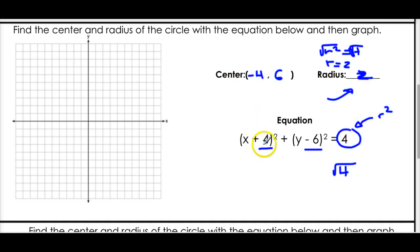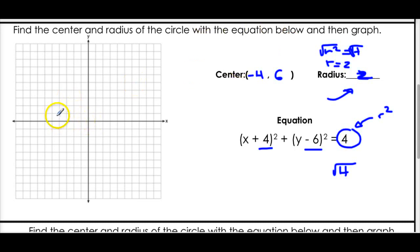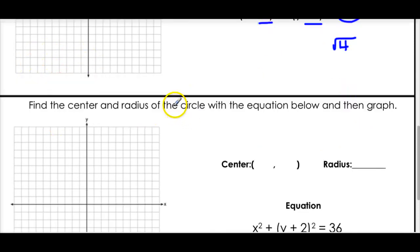Now that we have the center (-4, 6) and radius 2, let's graph it. Go to negative 4 on x, up to 6 on y. Get your compass, open it to 2, and graph the circle around the center.